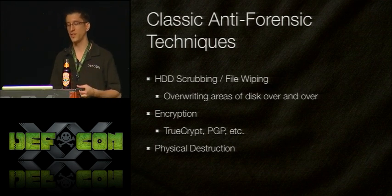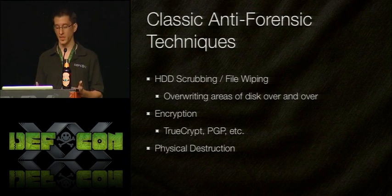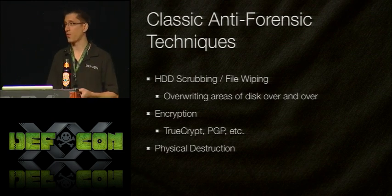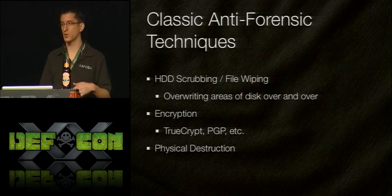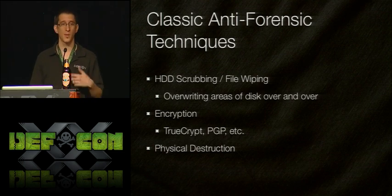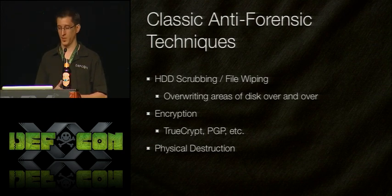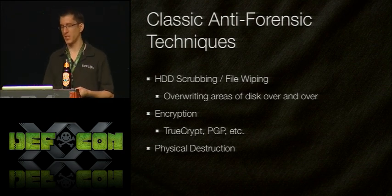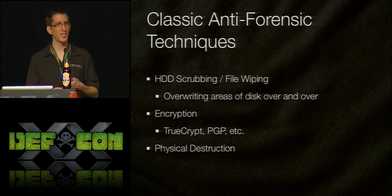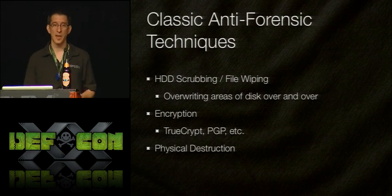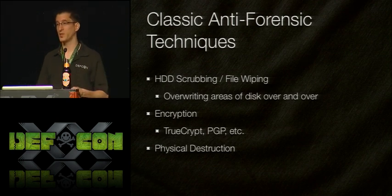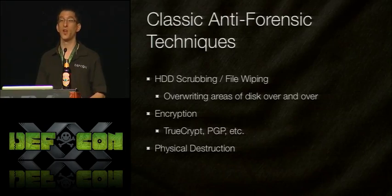There are three classical anti-forensic techniques. One is HDD scrubbing or file wiping — going over a certain area of the hard drive with zeros or random data, one time, seven times, or fifteen times, permanently destroying the evidence. The second is encryption, using something like TrueCrypt or PGP, making the data unreadable to anyone without the key. The third is physical destruction — smash the device, destroy a USB key or hard drive, so nobody can read anything off it.